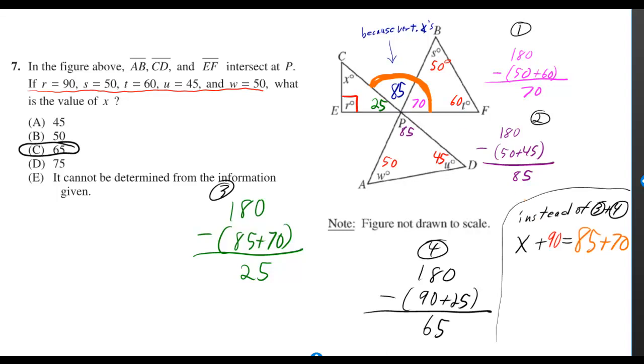Instead of steps 3 and 4, you could have done it a little bit quicker by using the exterior angle theorem. The exterior angle in this case would be 85 plus 70, and that's equal to the sum of the two angles of the triangle that's not touching the exterior angle. And if you solve this for x, you get the same answer.